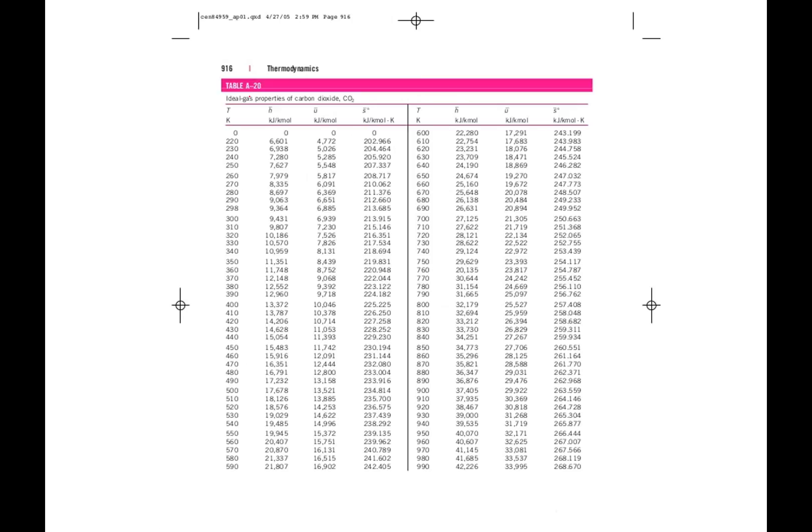Here we are. Ideal gas properties of carbon dioxide. I've got temperature, enthalpy, and internal energy. That's the one we're interested in. Temperature goes down this way. We need 300, which is right there. So the internal energy value is 6939. And we need 430. We're happy day. We're in luck. And we're going to pull a value out. 11053. The units are in kilojoules per kilomole. It's u bar.